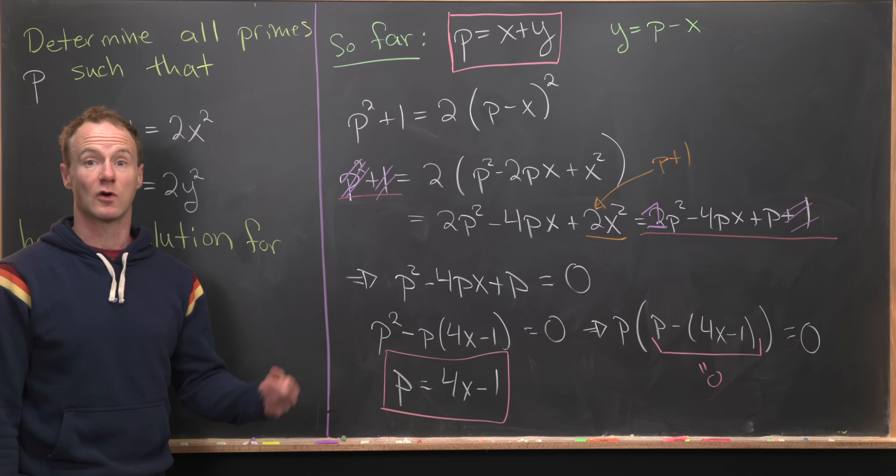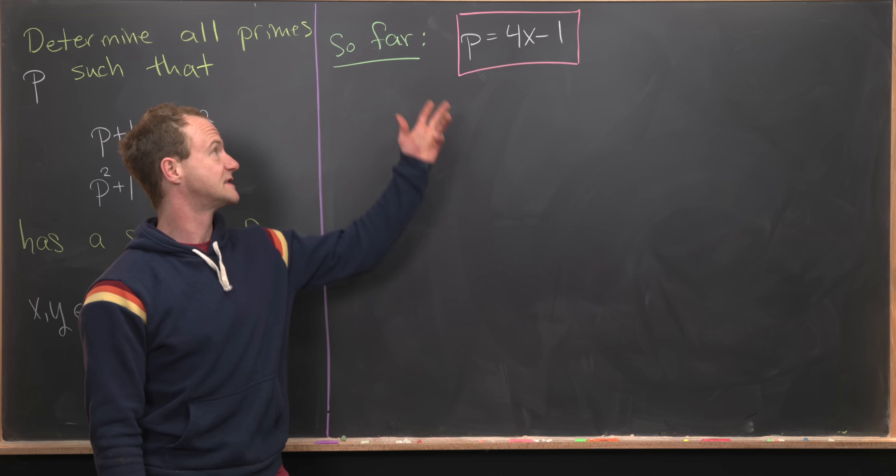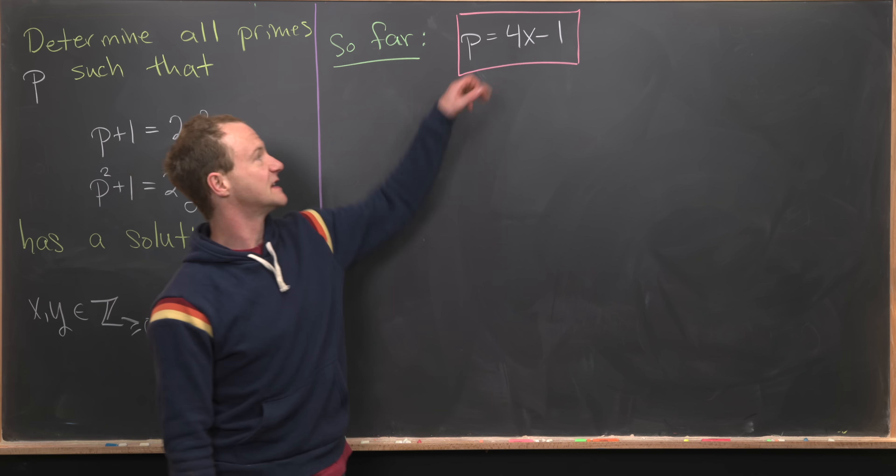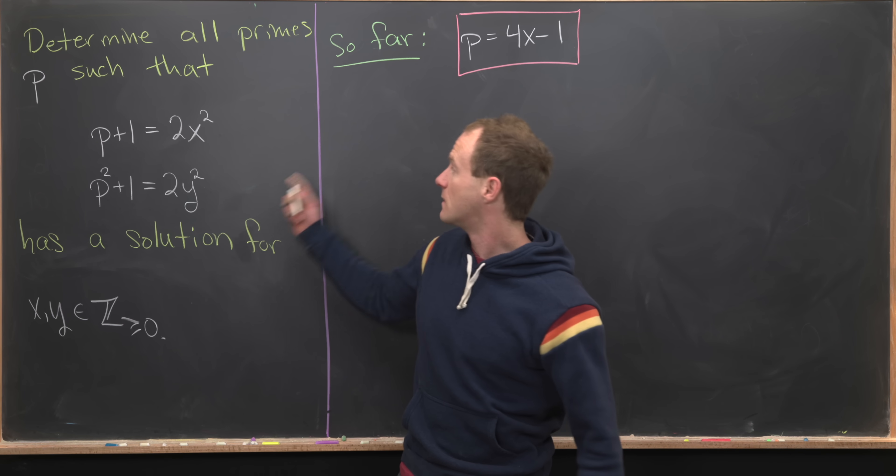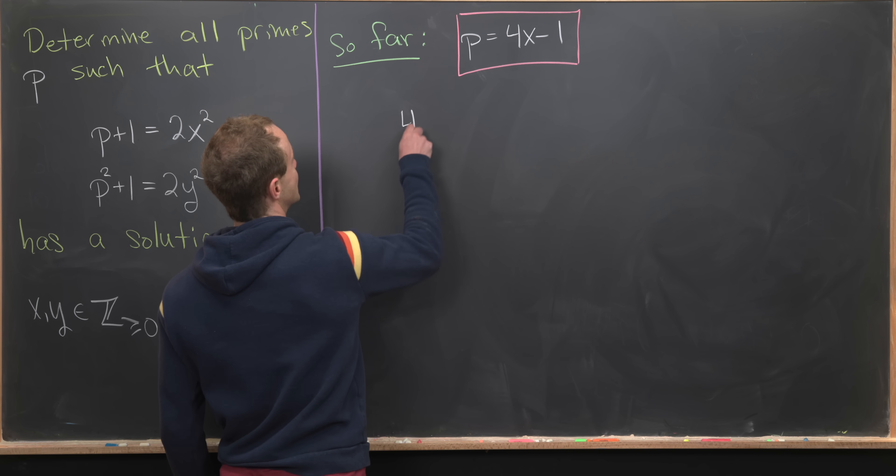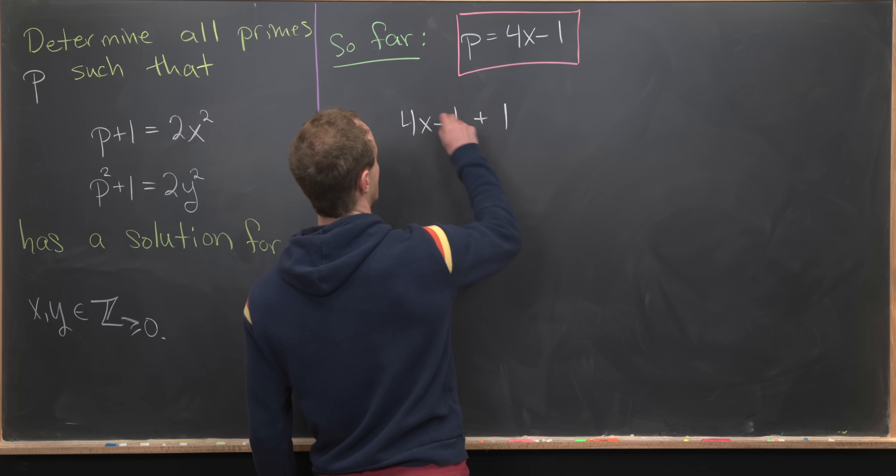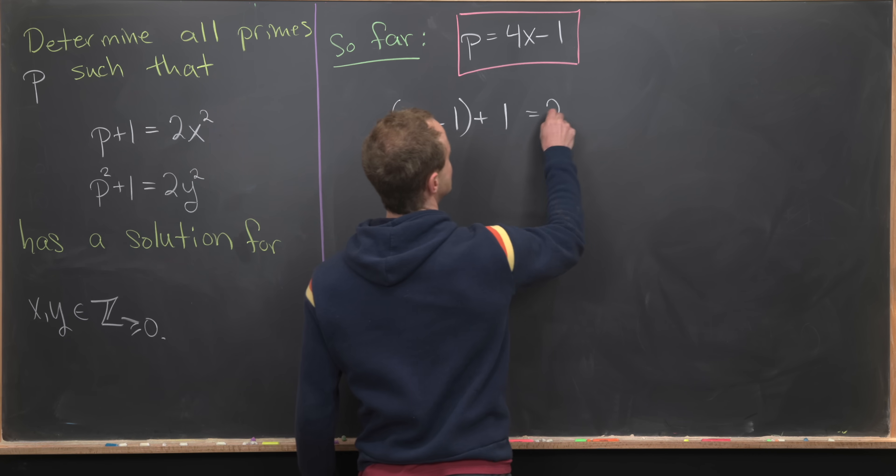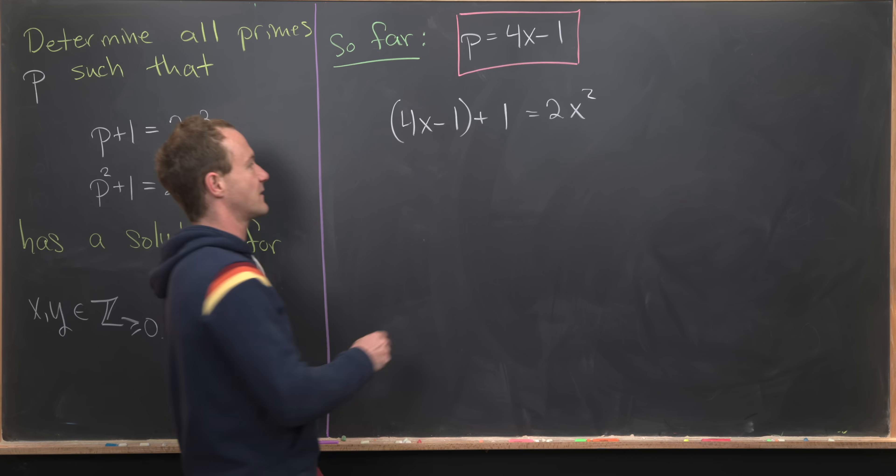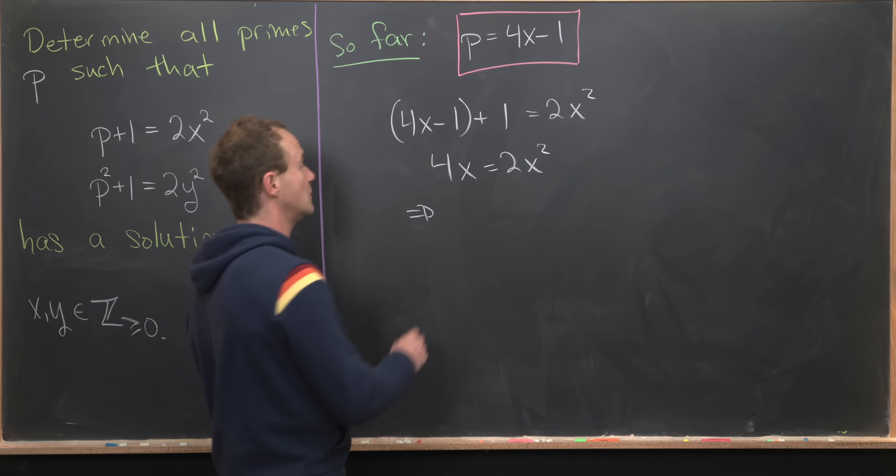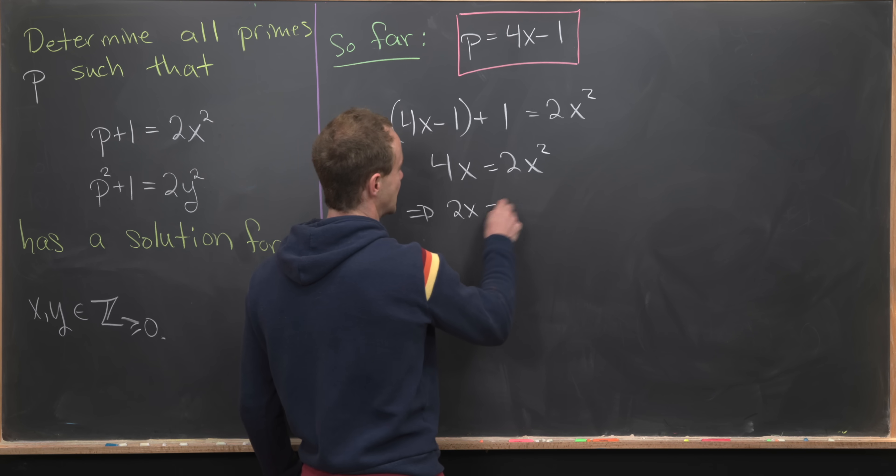So far we've determined our prime is of the form 4x−1, where x is a non-negative integer. Now we'll take this value of p and plug it into the first equation. That'll give us a quadratic polynomial to solve for x. We have 4x−1+1 equals 2x², which means 4x equals 2x².